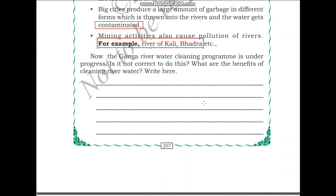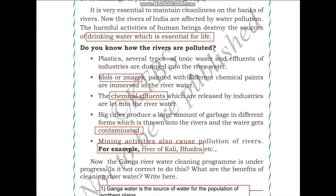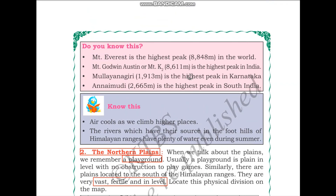The Ganga river water cleaning program is under progress. Ganga water is a source of water for the population of the northern plains, and many people are dependent on it. Using polluted water leads to several ill effects. The benefit of cleaning river water is that there will be a supply of clean water for all people who depend upon it. This completes the module on the northern plains.